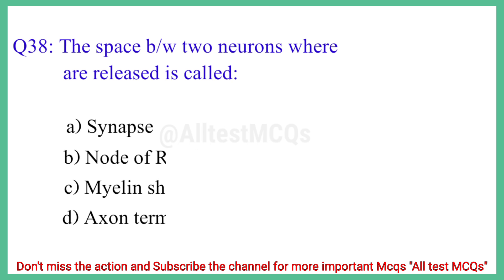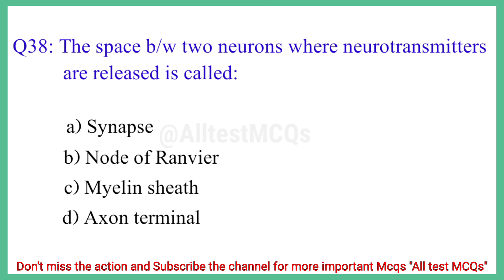Question No. 38: The space between two neurons where neurotransmitters are released is called? The correct answer is option A: Synapse.